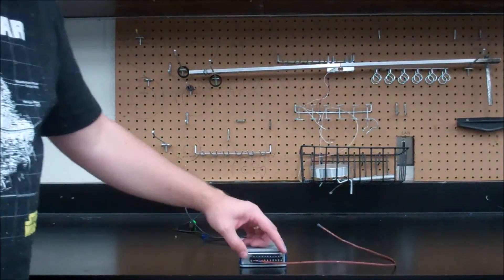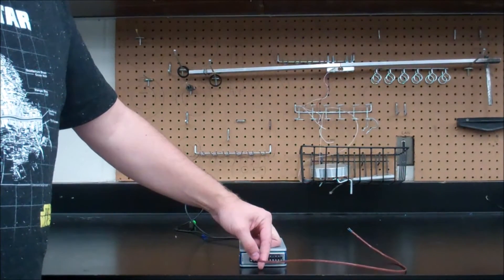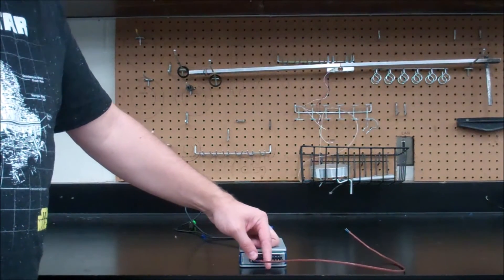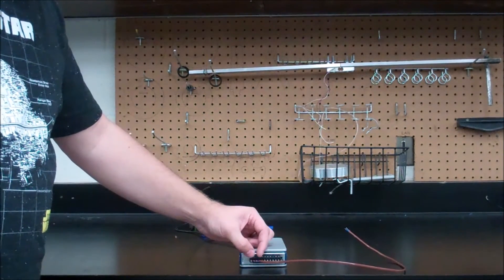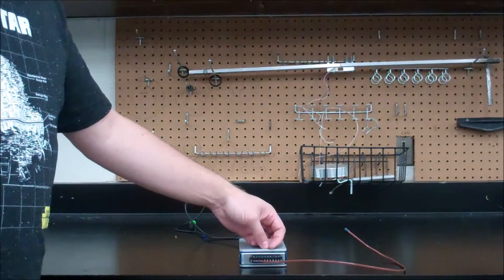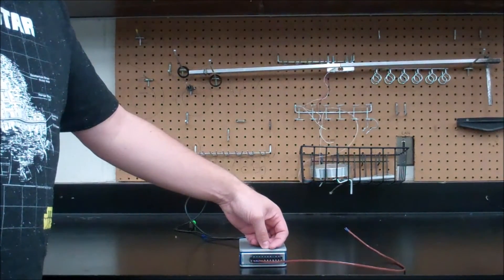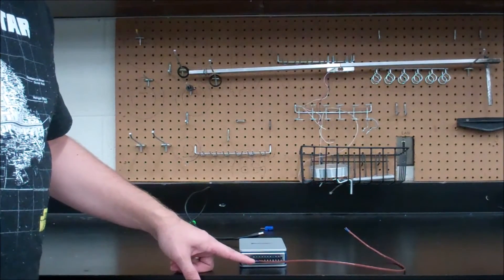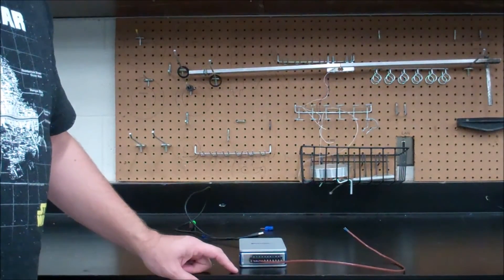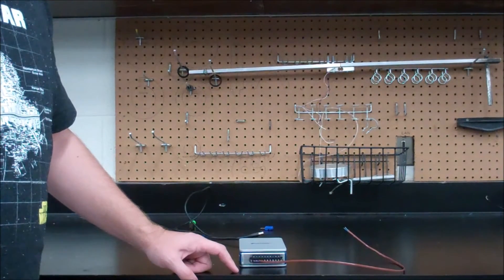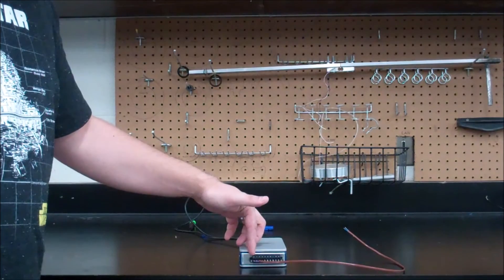So again, if you have a different type thermocouple like a K or a J type and not a T type, you can look up what's the positive and negative cable coloring. And if all else fails and you can't figure that out, then just connect the thermocouple, run your DAQ, see if you get the correct temperature. If not, then flip the wires, flip the polarity. So if you plug in, say you put the copper in zero and the silver in one and you're not getting the correct temperature, then flip the copper to one and the silver to the zero port.